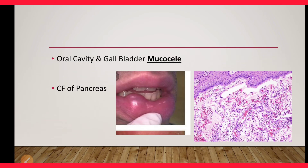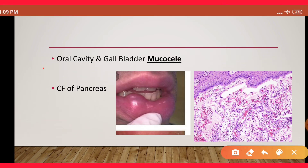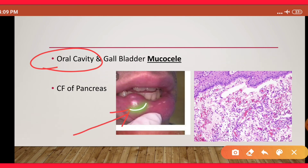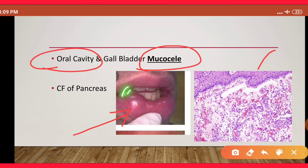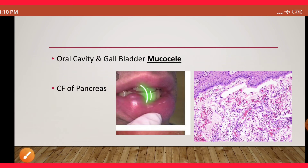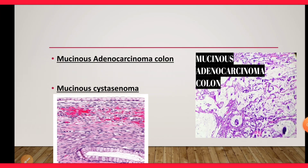Another example of epithelial mucin production is the oral cavity. Due to trauma or other reasons, you can develop a mucus-filled lesion over the lip or inside the oral cavity — this is known as a mucocele. It is not a tumor, just a mucus-filled swelling, also seen in the gallbladder. On histopathology of the lip mucocele, the lining epithelium is stratified squamous epithelium, below which there is mucus material and inflammatory cells. Cystic fibrosis of the pancreas is also an example.